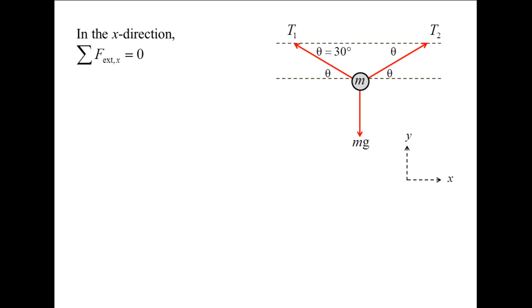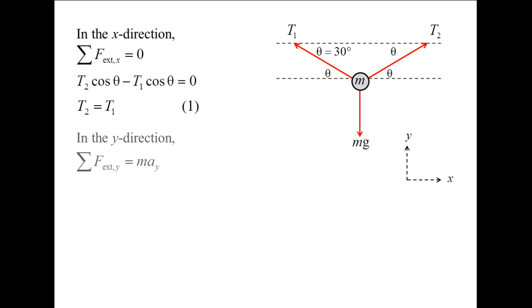The sum of the external forces in the x-direction is the component of T2 in the x-direction, which is T2 times cosine theta, minus the component of T1 in the x-direction, which is T1 times cosine theta. Before the cut, the tension in both wires is the same. All three forces have components in the y-direction; the tensions point upward while the weight points downward. The sum of the forces in the y-direction is T2 times sine theta, plus T1 times sine theta, minus mg. Plugging equation 1 into equation 2 and solving for T2, we obtain an expression for T2 in terms of mg and theta.